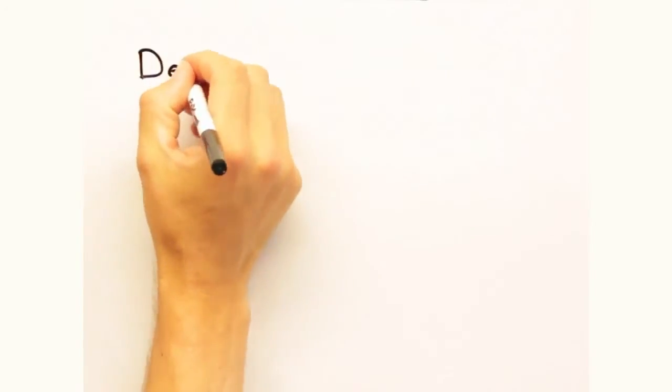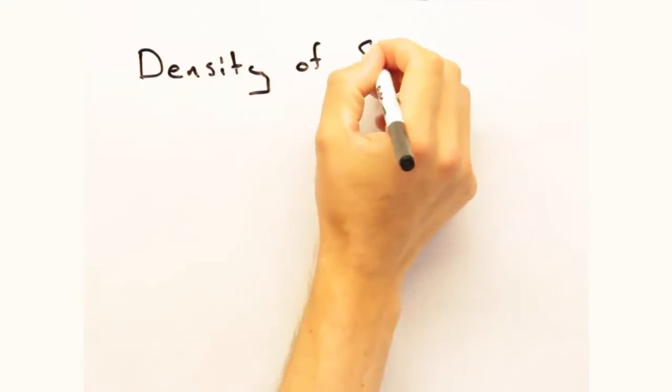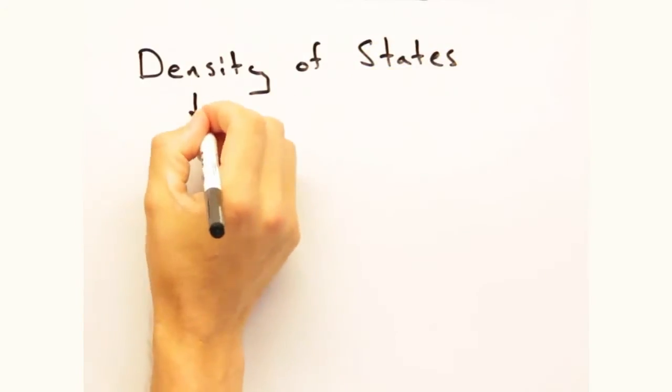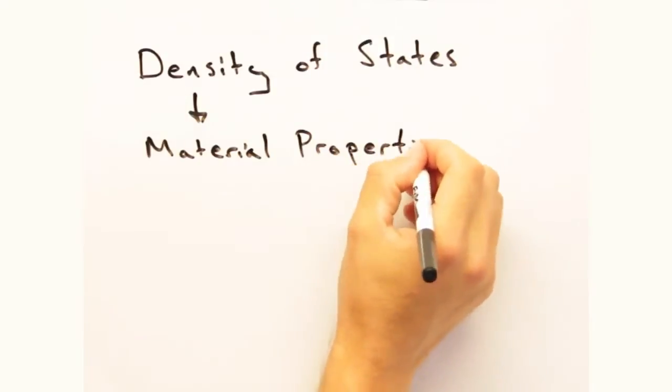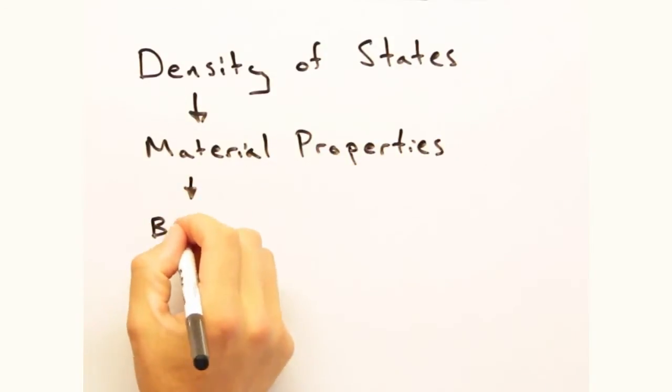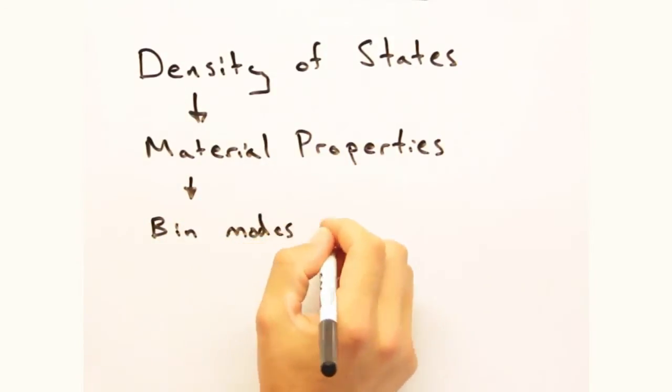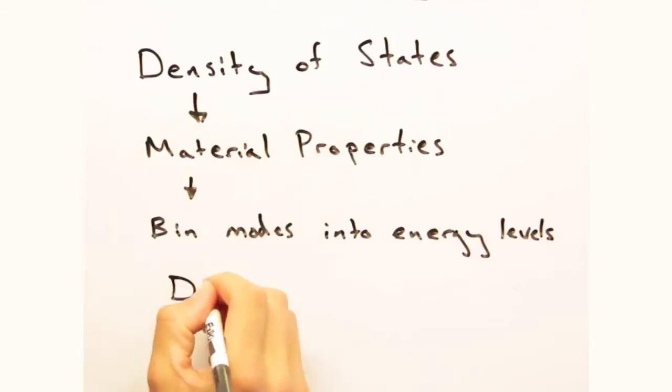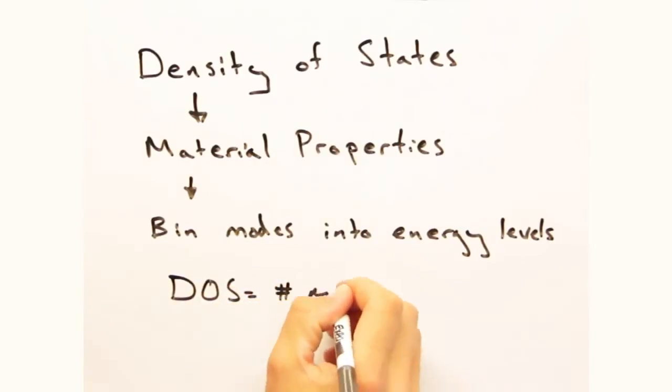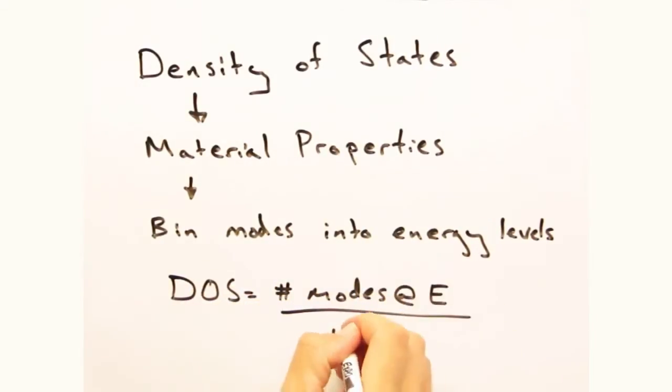Now we want to move on to the second part of today's screencast and talk about the density of states. Ultimately, we want to be able to discuss material properties. But we can't talk about that until we know the energy levels of our system. Rather than thinking about all the individual vibrational modes, it's good to be able to bin them into energy levels. And that's where the density of states comes in. The density of states tells us the number of modes at a particular energy.